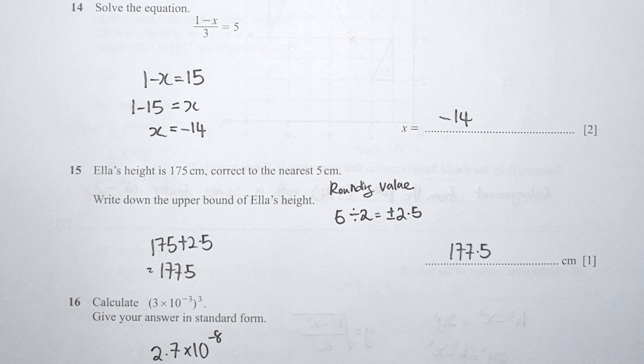For question 15, Ella's height is 175 cm corrected to the nearest 5 centimeters. The rounding value is 5 divided by 2, which equals 2.5. Since they want the upper bound — the highest possible value — I take 175 plus 2.5, which is 177.5.